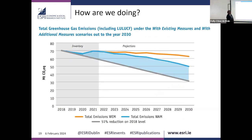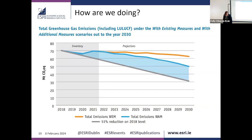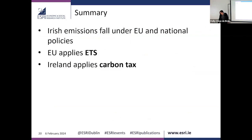Looking at how Ireland is doing: historical emissions to 2022 and projections show the yellow line is the existing policy scenario, the blue line includes additional measures the government says it will implement but hasn't yet, and the gray line represents the legally binding 7% yearly reduction. The gap between these lines shows we're not doing great.